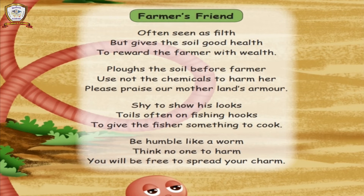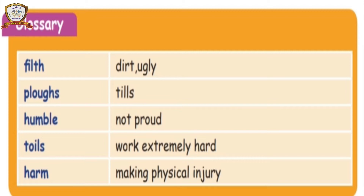Humble means not proud, requesting manner. Toil means work extremely hard. Harm means making physical injury - don't harm others. These are the glossary words from the poem Farmer's Friend.